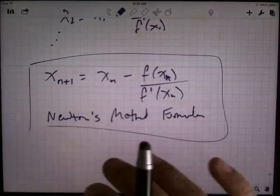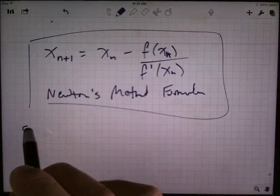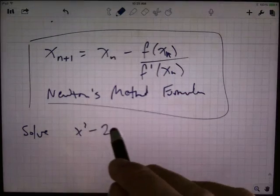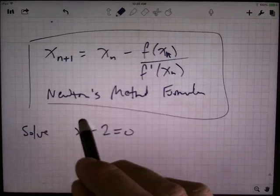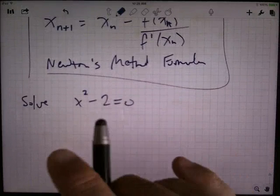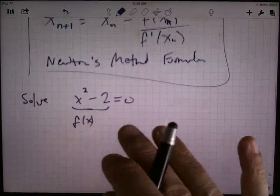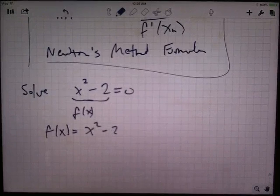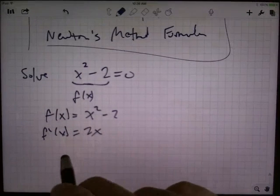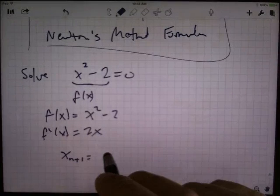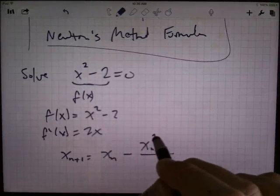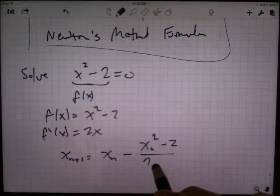Let's do an example and see how this works. The example that I want to do is solve this equation, or at least approximate a solution. x squared minus 2 equals 0. I have an algebraic way of doing this. If I add 2 to both sides and take the square root, this is going to have solutions at plus and minus square root of 2. But let's see what this is. So this is my function, f of x. f of x equals x squared minus 2. f prime of x is 2x. My Newton's method solution looks like x_{n+1} equals x_n minus the function evaluated at x_n, so that would be x_n squared minus 2, divided by the derivative, so 2x_n.